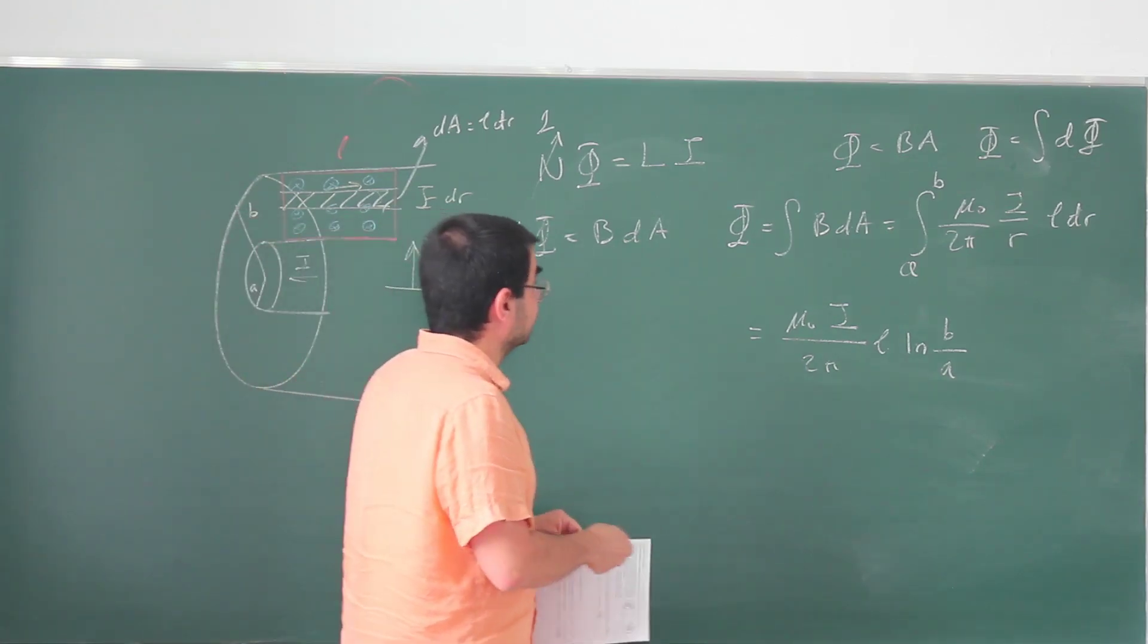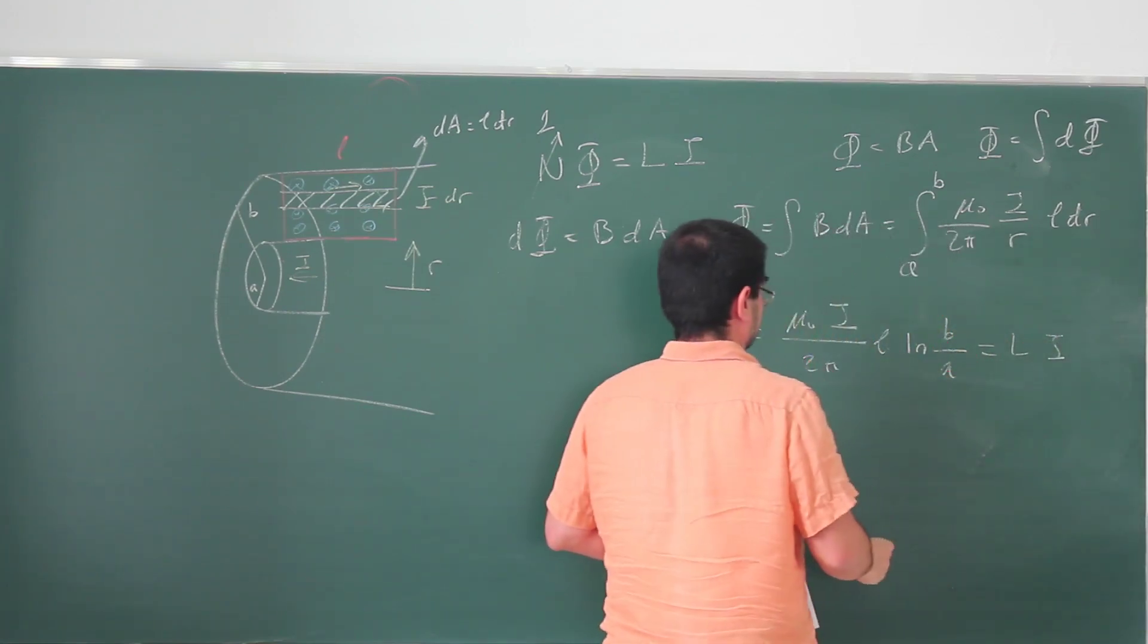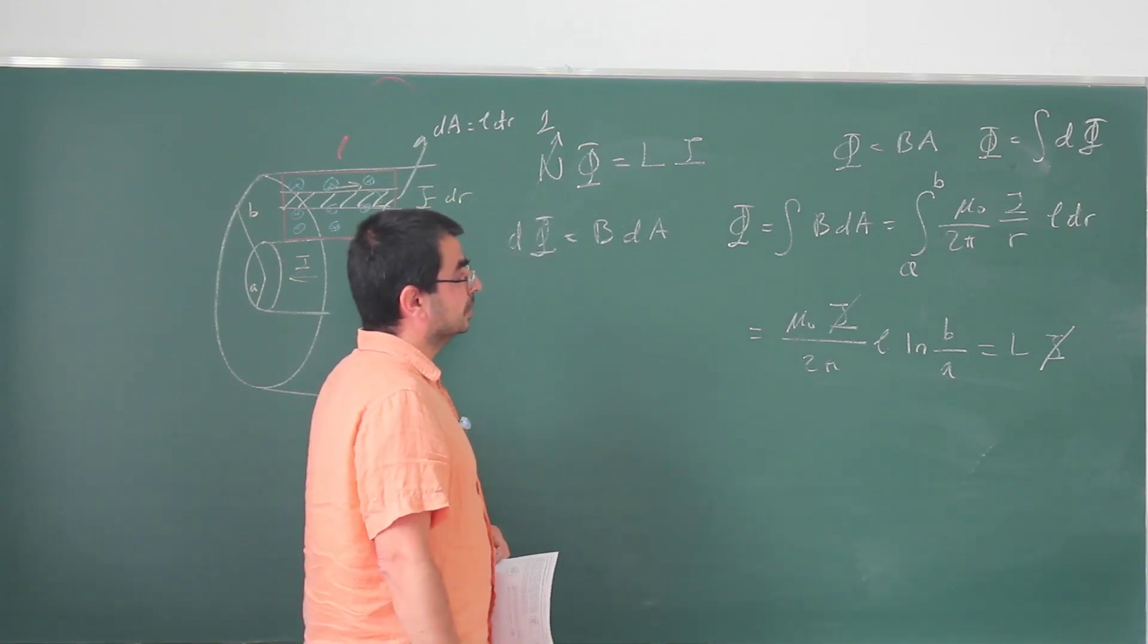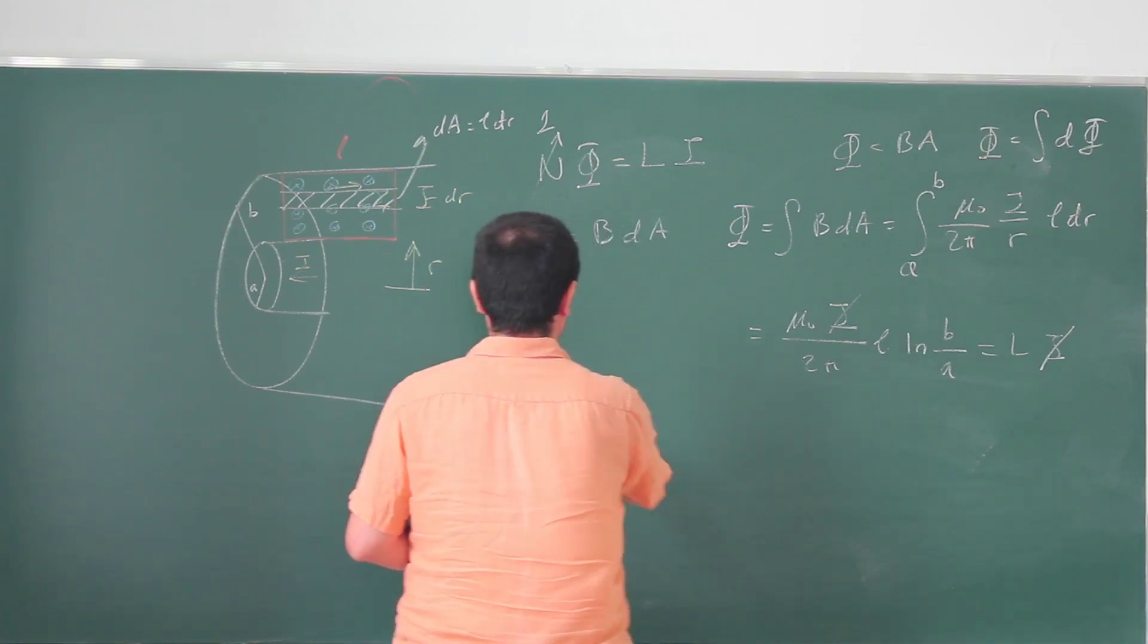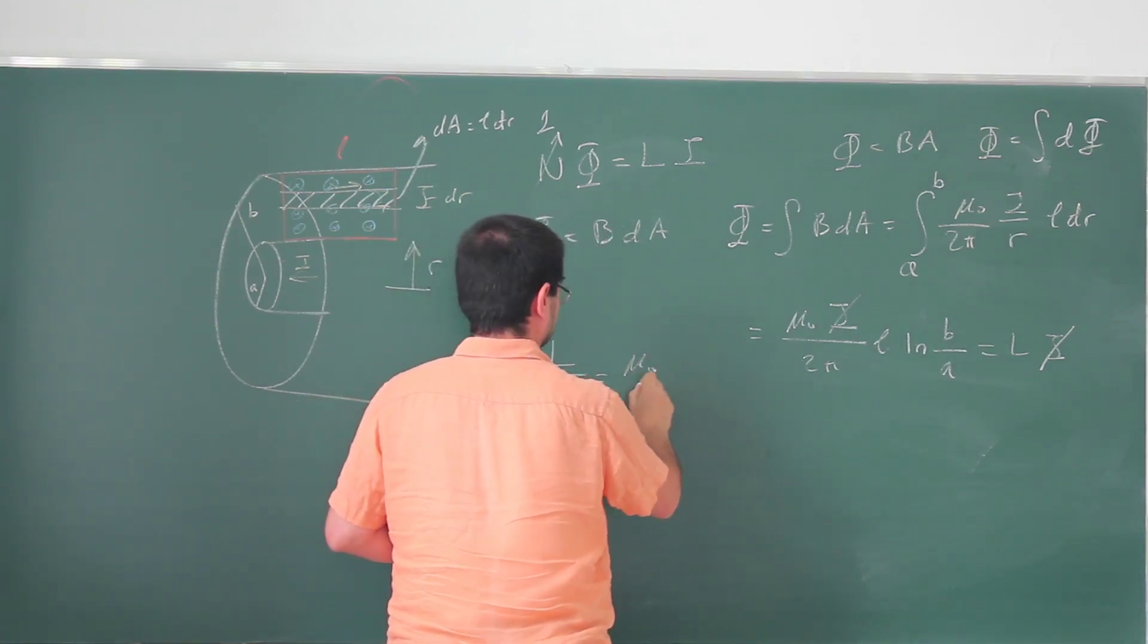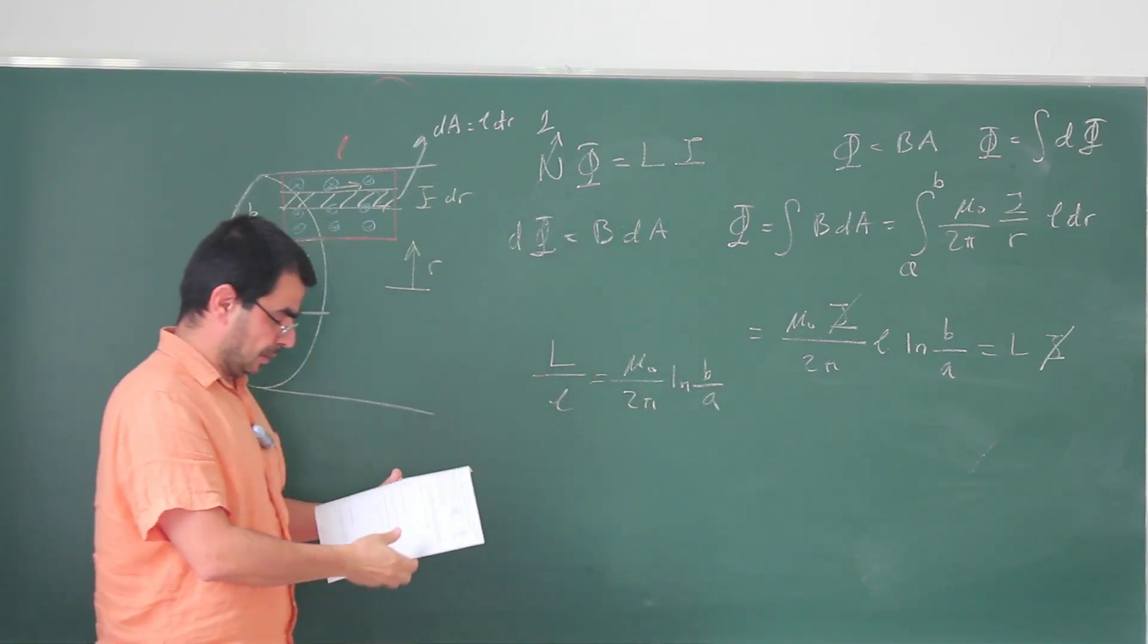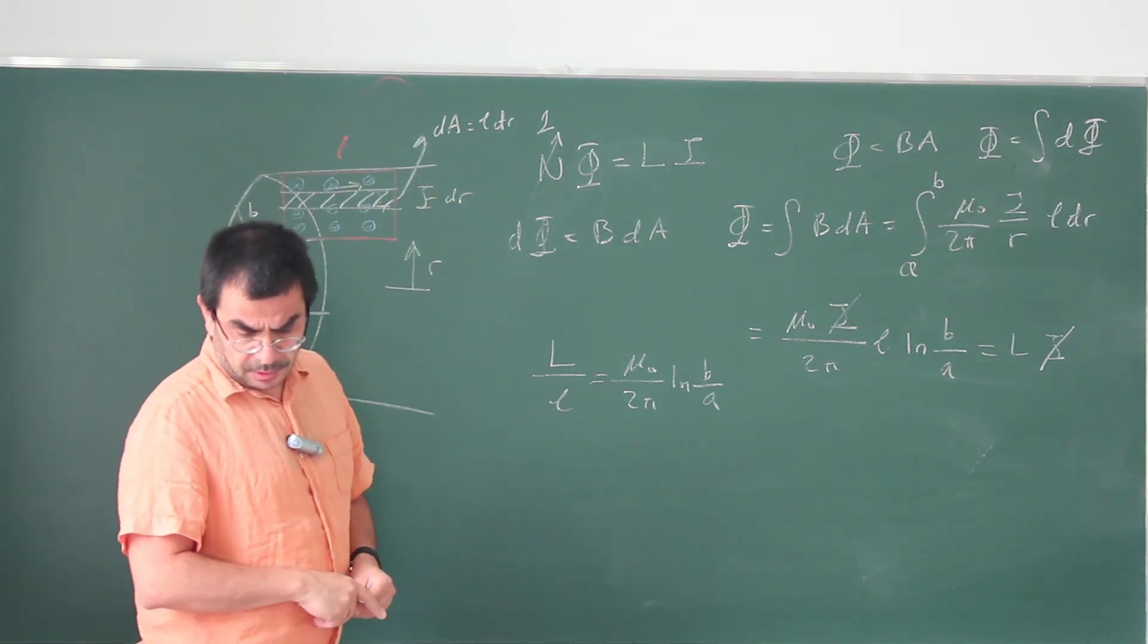So this is the flux. And on the right-hand side, we have L times I. I's go away. They're asking for not the inductance, but the inductance per unit length. So I'll move the small l over here. L over small l is going to be mu naught over 2 pi ln B over A. And this is, in fact, the answer given over here.